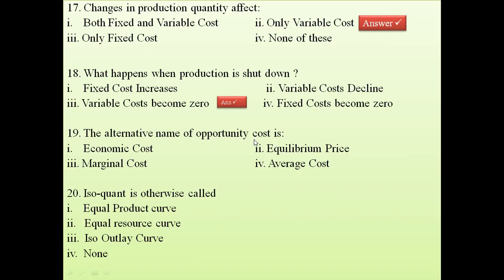Question 19: The alternative name of opportunity cost — the cost you have sacrificed for the next best alternative. Among the options, the answer is economic cost. Economic cost is the alternative name for opportunity cost.